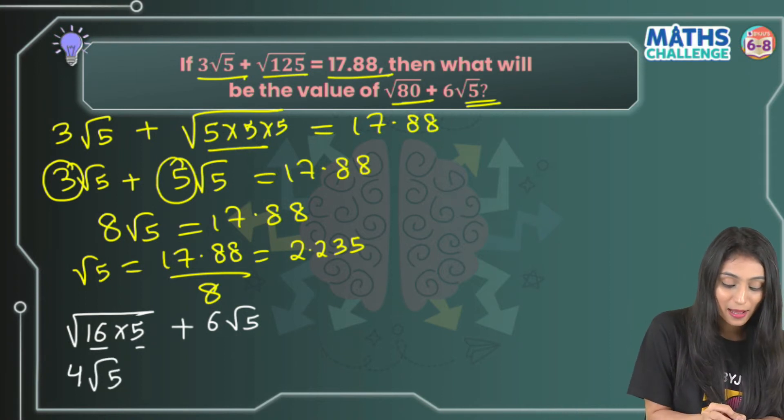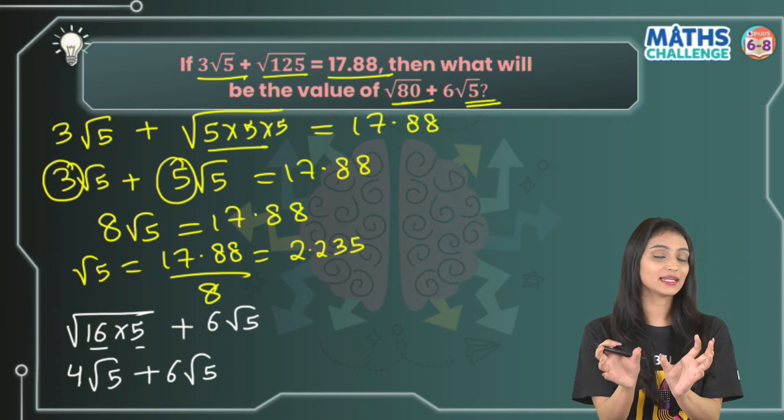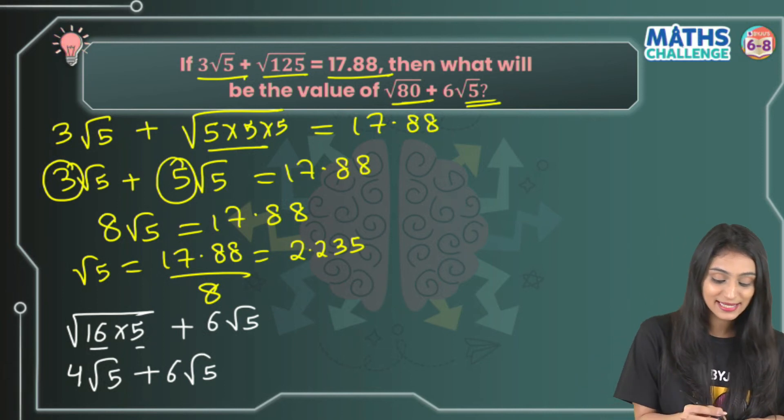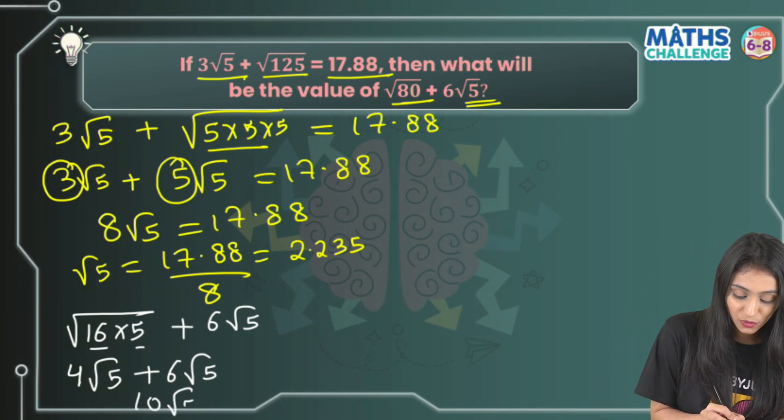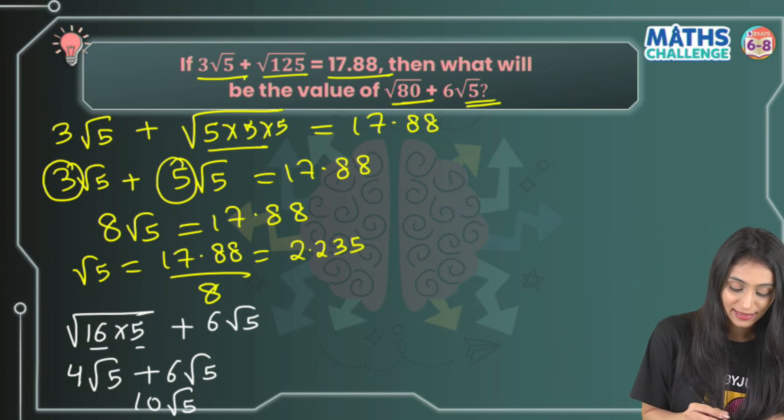Now we know how to add numbers involving square roots: 4√5 + 6√5 = 10√5. Now simply I'll substitute the value of √5, which equals 10 × 2.235.